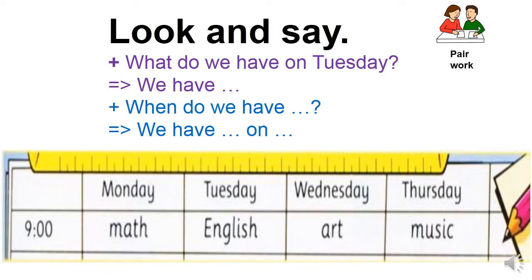For example: When do we have math? Look at here — When do we have math? We have math on Monday. Các bạn ghi nhớ: hai cái câu hỏi cô giảng rồi nha. 'What' thì trả lời ra môn học. 'When' thì trả lời ra thời gian — khi nào, thứ mấy. What do we have on Monday? We have math. When do we have math? We have math on Monday. Rồi các bạn làm tương tự từ Tuesday cho đến Thursday.